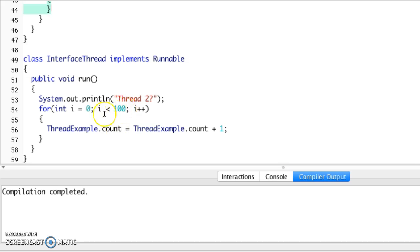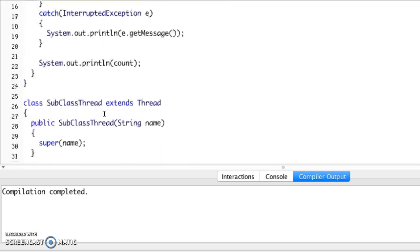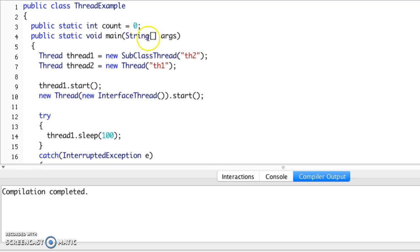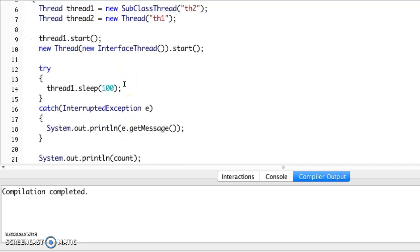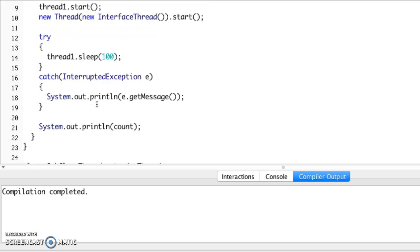In our main we just go ahead and create the two threads, call start in the different fashions depending on whether it's a subclass or the interface implementation, and then thread one I'm going to send it to sleep for a little bit.